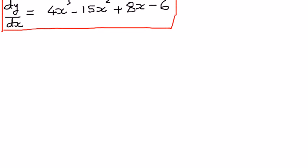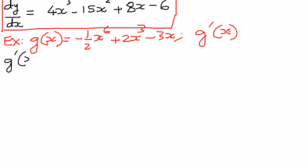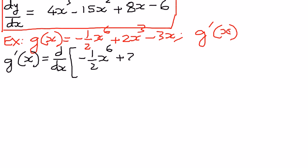Let's look at another example. In this second example, we have a function g of x equal to negative one half x to the power of 6 plus 2x to the power of 3 minus 3x, and we want to find g prime of x — the derivative of this function with respect to x.